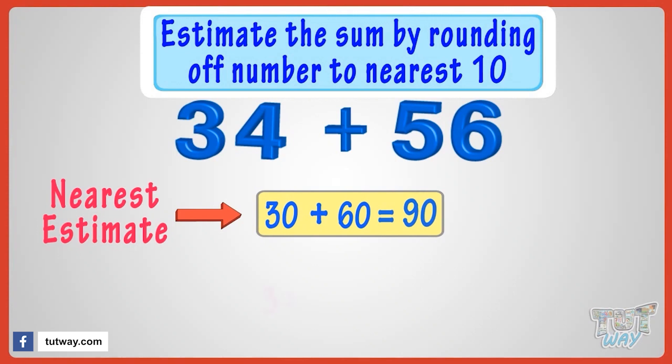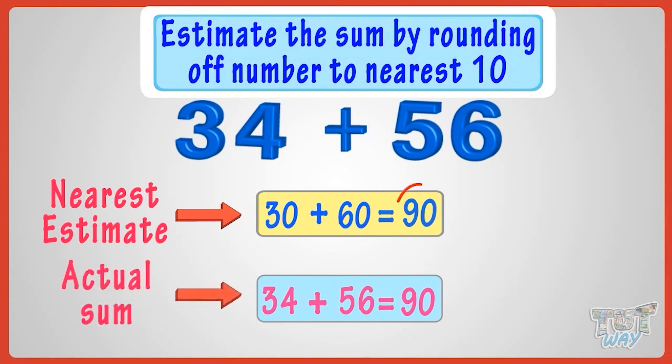Now, thirty-four plus fifty-six gives us ninety. Oh, wow! Here, the estimate and actual sum are the same. Good!